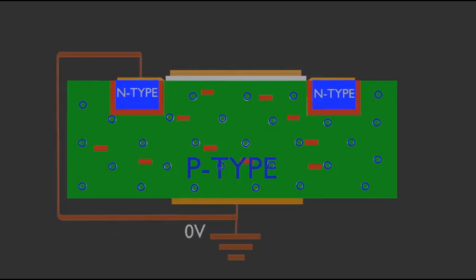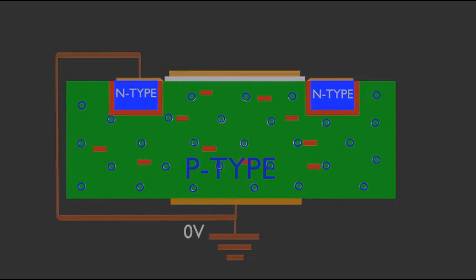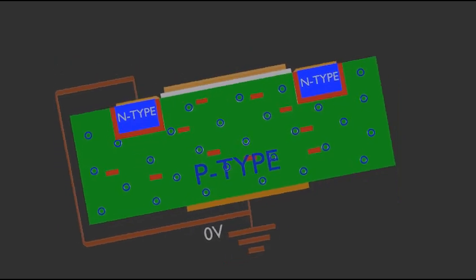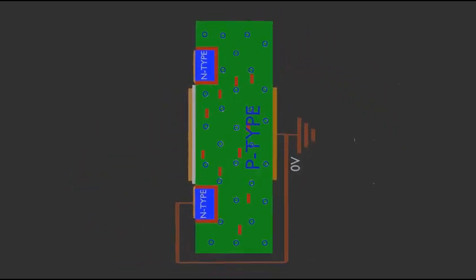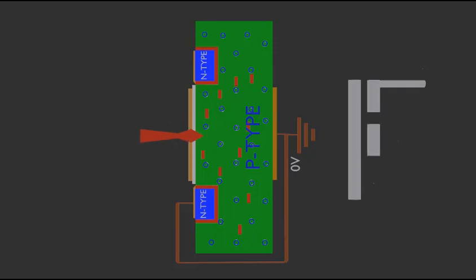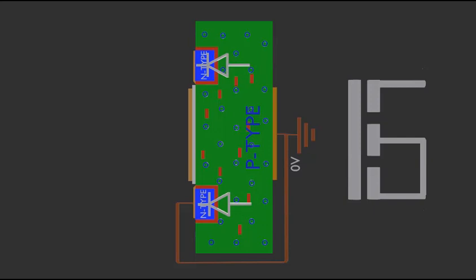Now let's talk about the symbols and the logic behind them. Starting from the enhancement type MOSFET structure — if we rotate it and derive the symbol: first is the gate on the left side, then the drain, substrate, and source, with source connected to the substrate. We also draw the diode between substrate and source/drain, since the substrate is p-type and the channels are n-type. The arrow direction shows this, giving us the symbol of the n-channel enhancement type MOSFET.